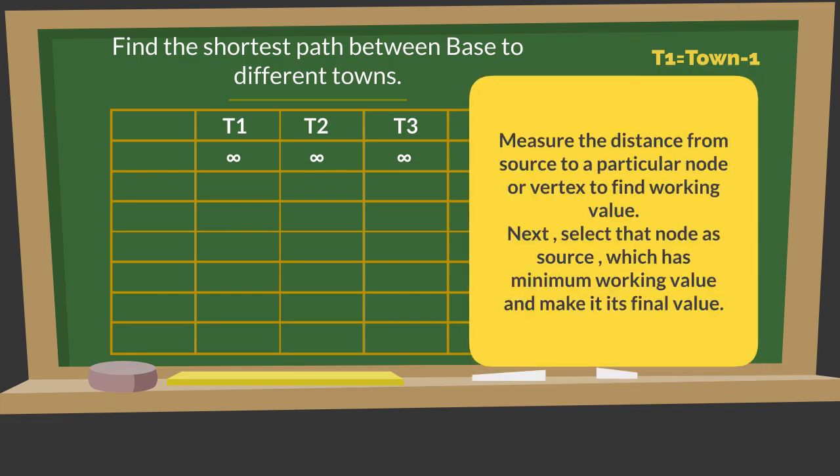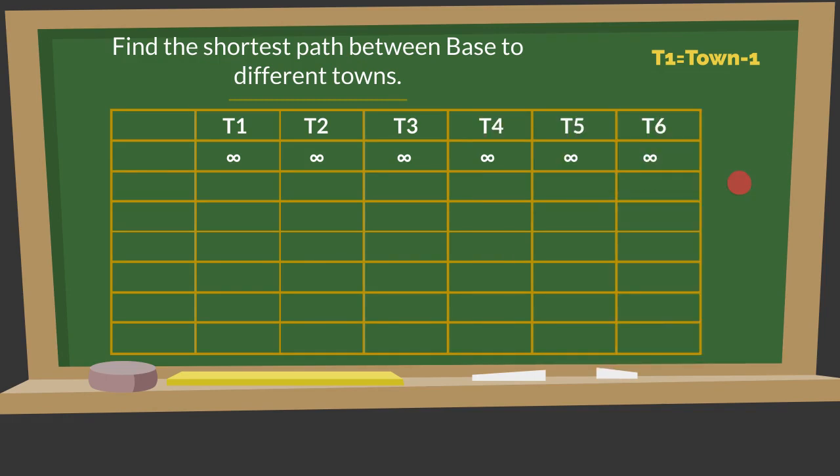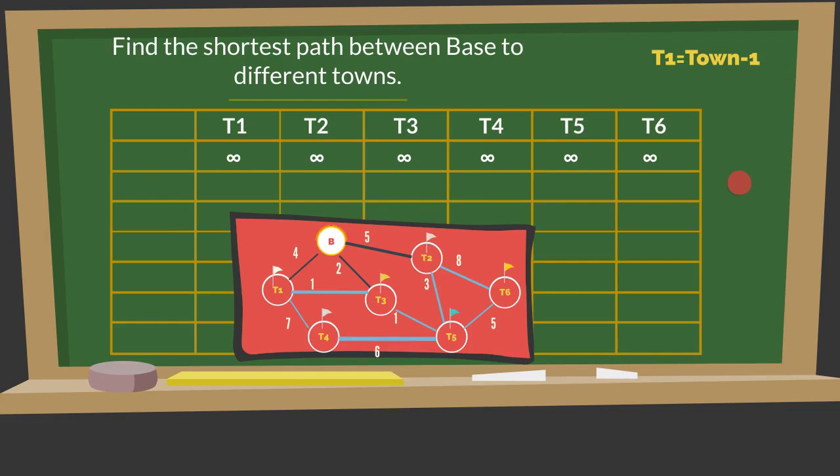Students are supposed to remember the rules from previously discussed examples. Measure the distance from source to a particular node or vertex to find working value. Next, select that node as source which has minimum working value and make it its final value. In our example, starting from base, we will measure the working values to its directly connected towns. These are town 1, town 2, and town 3.